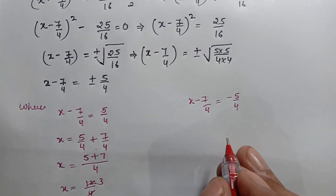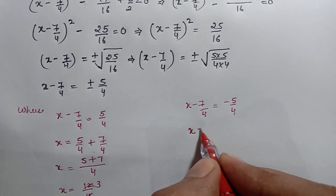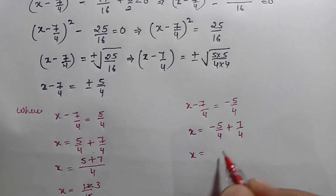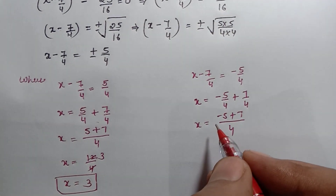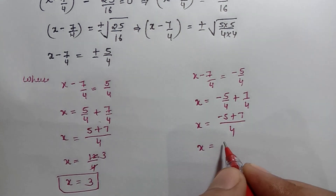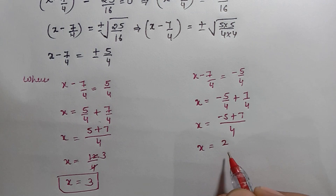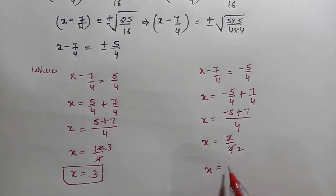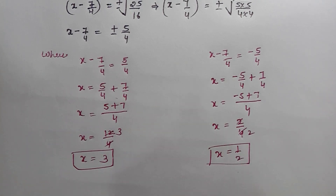Negative के साथ भी calculate करते हैं: x minus 7 by 4 equals to minus 5 by 4। तो x equals to minus 5 by 4 plus 7 by 4। Denominator same है — minus 5 plus 7 equals to 2, और 7 के पास positive sign है जो बड़ा है, तो x equals to 2 by 4 equals to 1 by 2। दो roots हैं: x equals to 3 and x equals to 1 by 2।